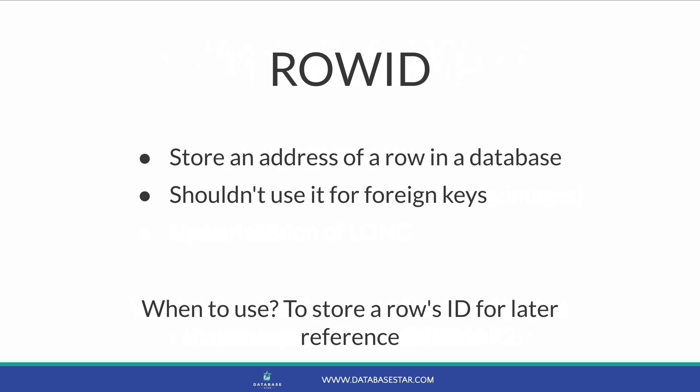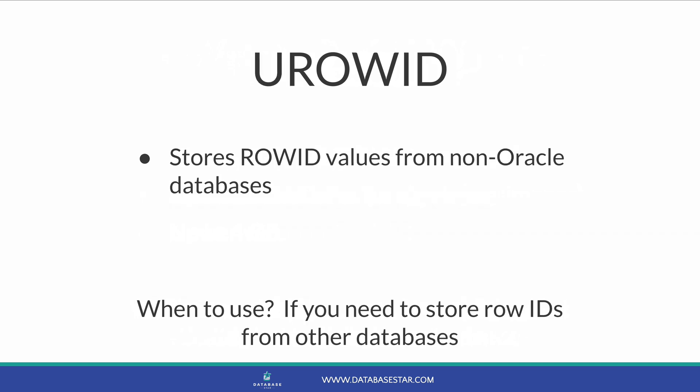The ROWID data type stores the address of a row in a database — an alphanumeric value used by the ROWID pseudocolumn. You can use it to store a ROWID for later reference, but it should not be used as a foreign key to other rows. The UROWID data type stores ROWID values from non-Oracle databases, and you should consider it when you need to store ROWIDs from non-Oracle sources.